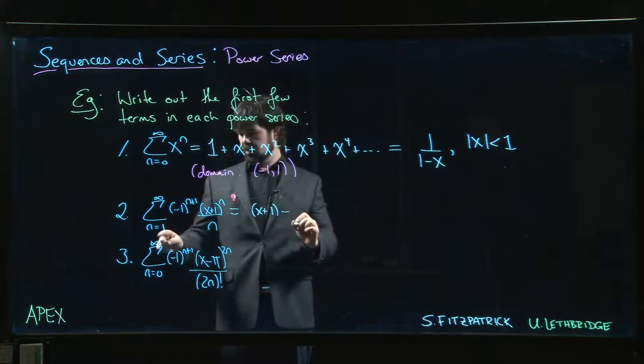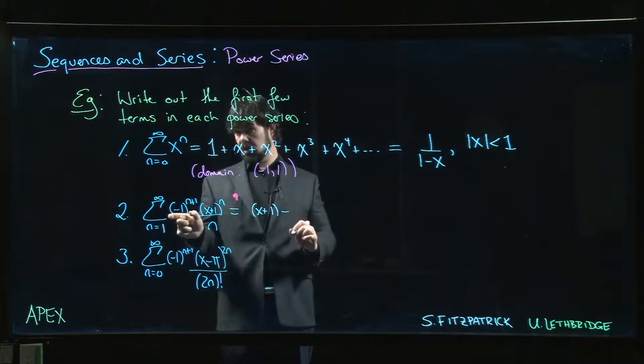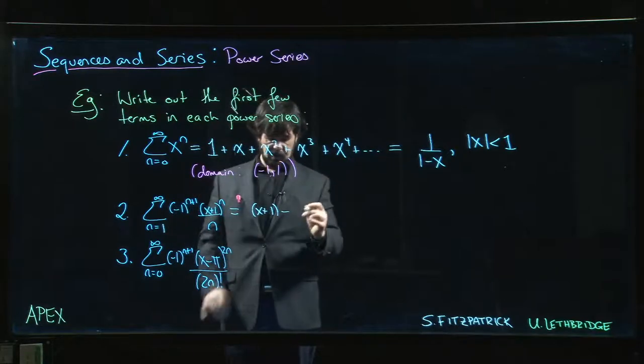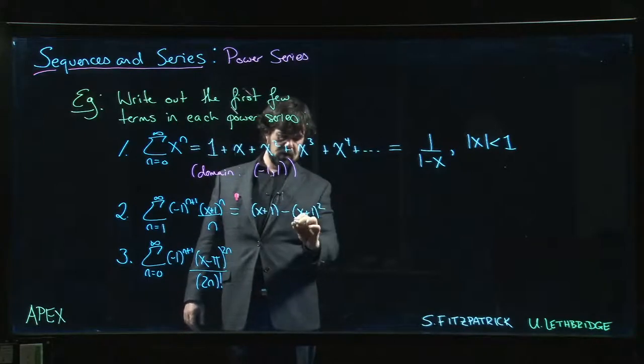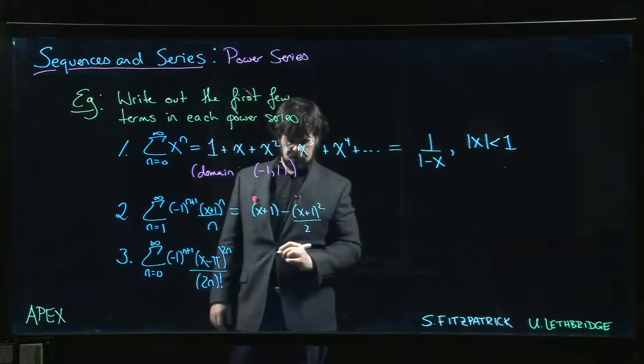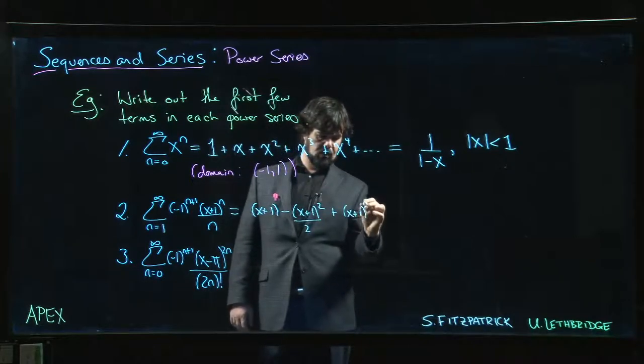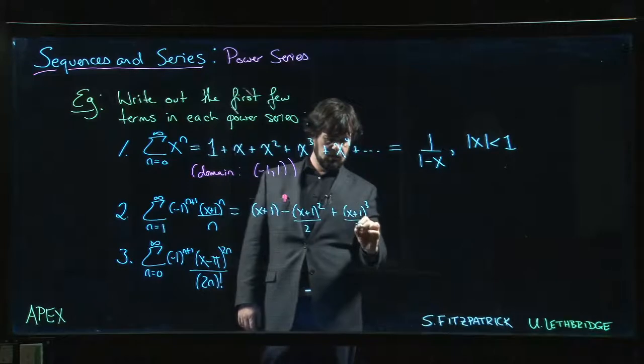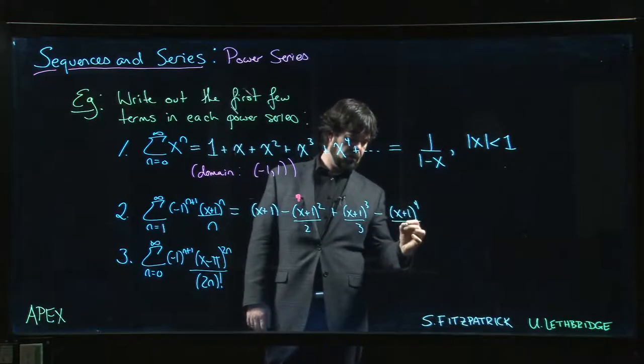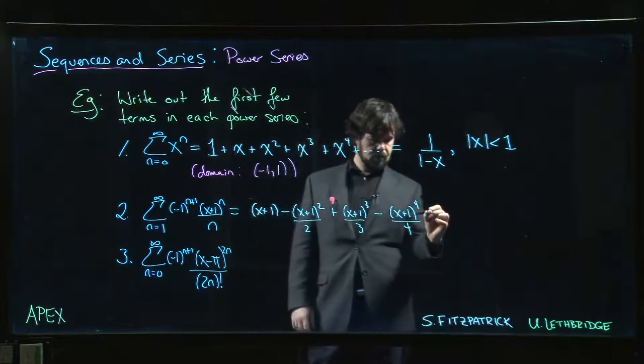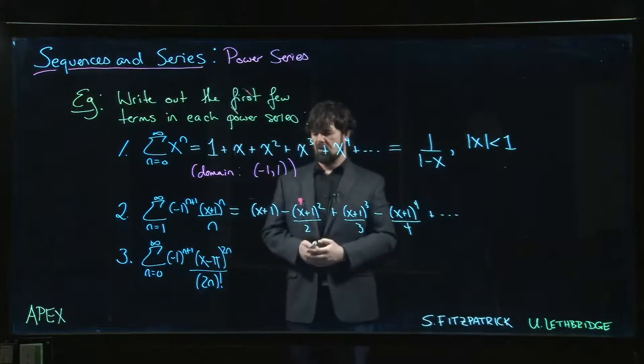Minus, right? Go to n equals two. Two plus one is three. That's odd. We get the minus sign. We get alternating signs. We're sort of used to this by now. x plus one squared over two. And you kind of start getting the idea of what's going on here. x plus one cubed over three, x plus one to the four over four. And so on. Not so bad.